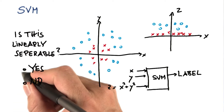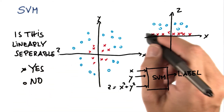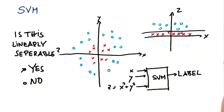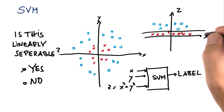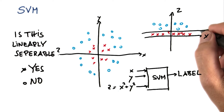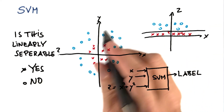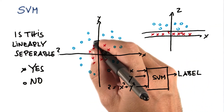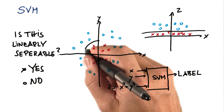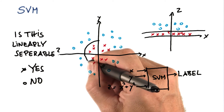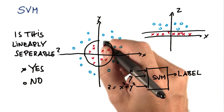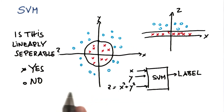And I would say the answer is yes, here is the line. And what's really interesting, this line over here in the original data corresponds to a circle — the circle of equal distance to the origin in the coordinate system.